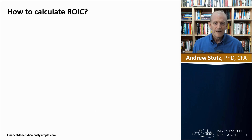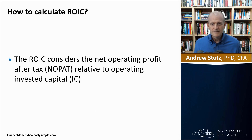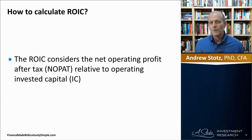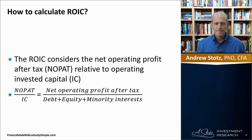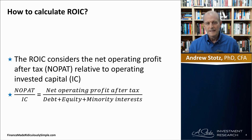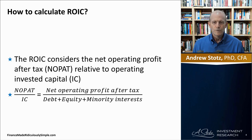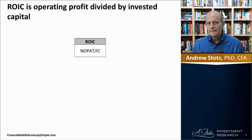How do you calculate it? It considers the net operating profit after tax relative to operating invested capital. You can see the word operating — this is about measuring the operating performance of a company. It's calculated by taking the NOPAT divided by invested capital. Invested capital, in this case, is debt, equity, and then a small amount of minority interest. So ROIC is operating profit divided by invested capital.